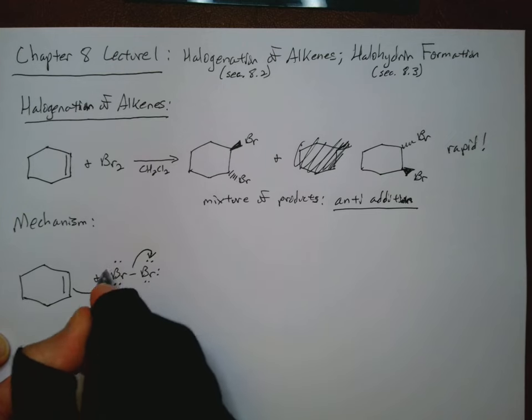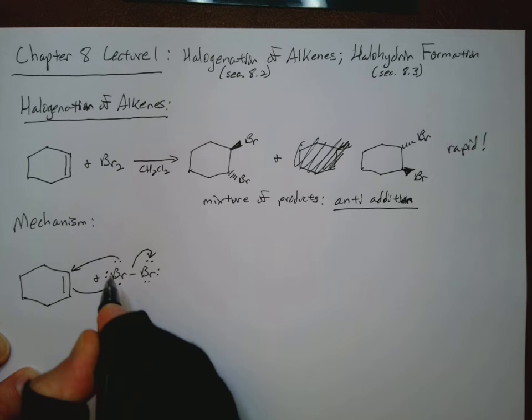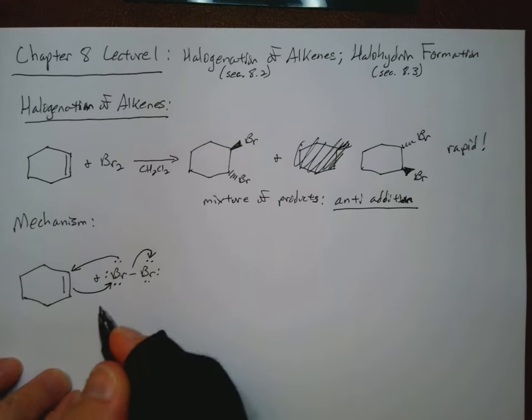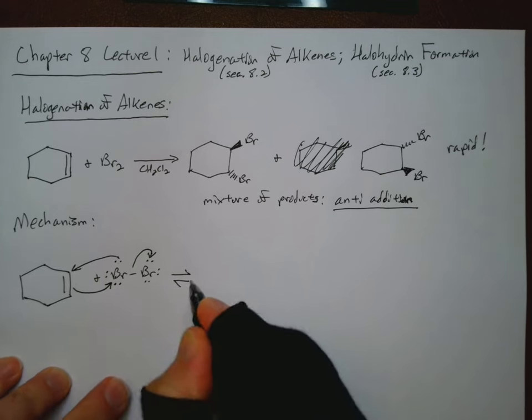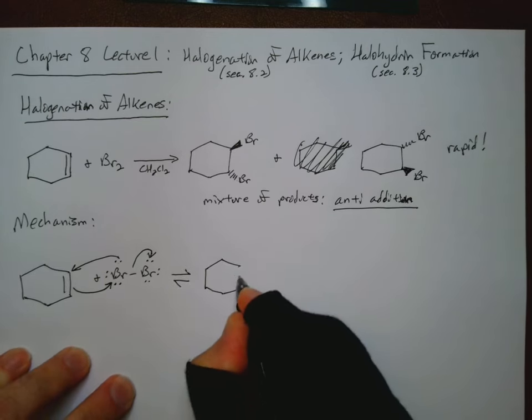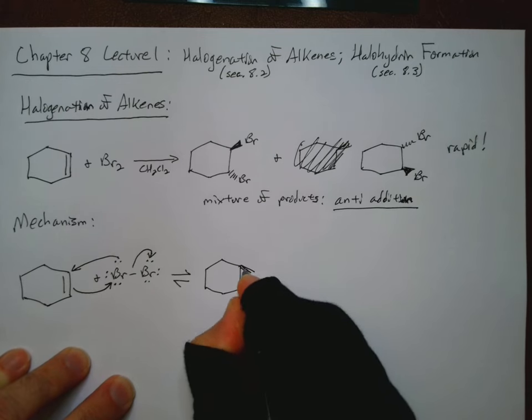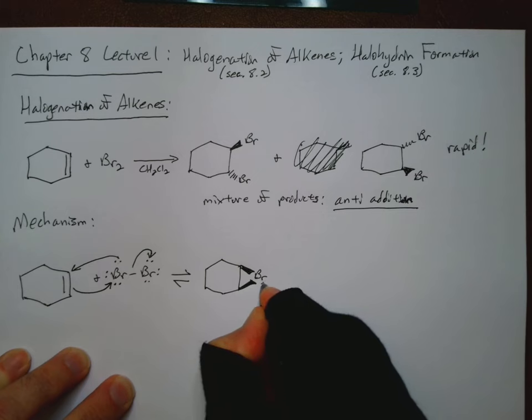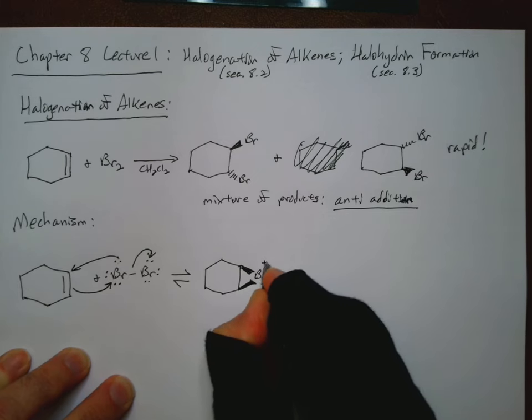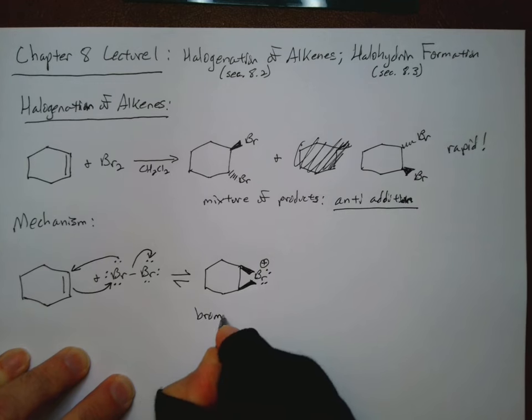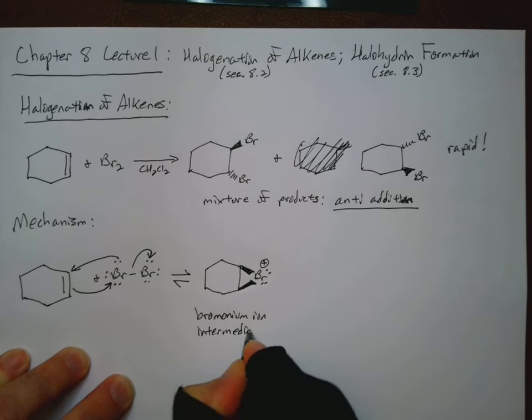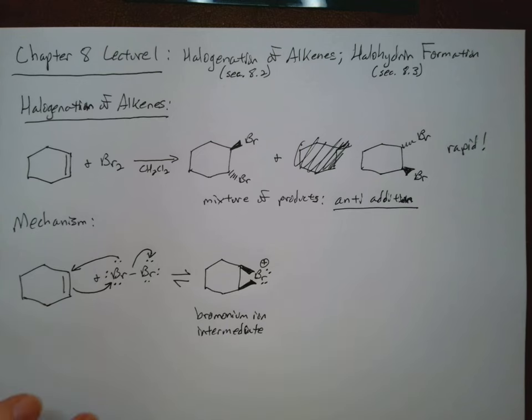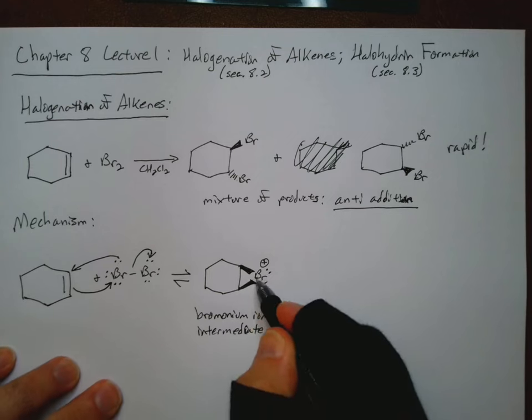Now, we have extra electron density in this double bond. So those electrons can come and make a bond to the bromine. This will actually end up breaking that bromine-bromine bond. But bromine itself has plenty of electron density. So it will then, at the same time, react with the other carbon. And so what we get is the following.